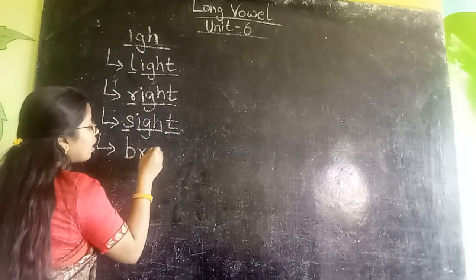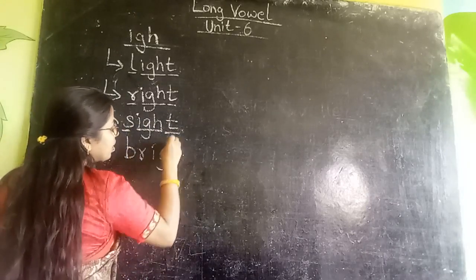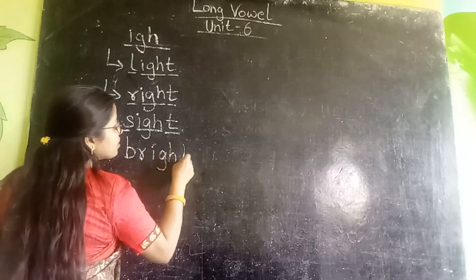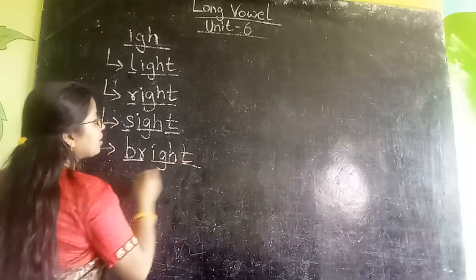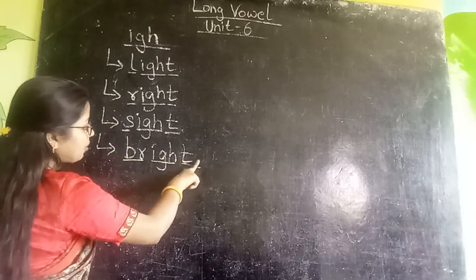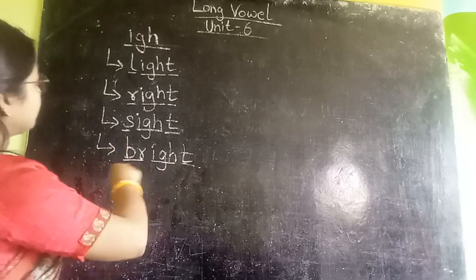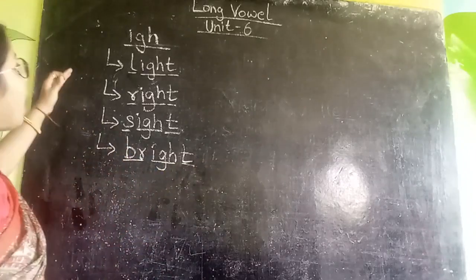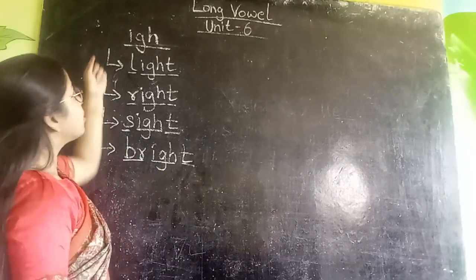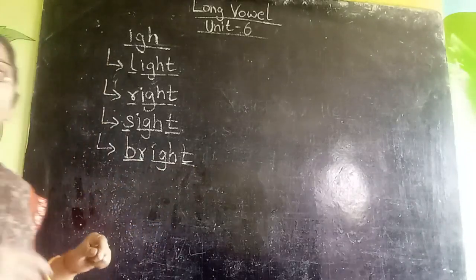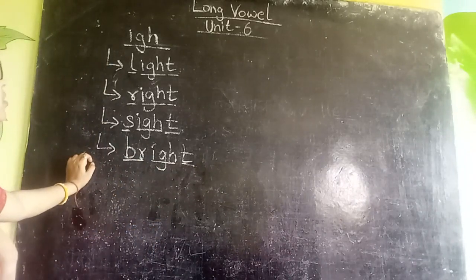BR, I, G, H, T — bright. Okay, so these are the I sound words. What letters together make the I sound?